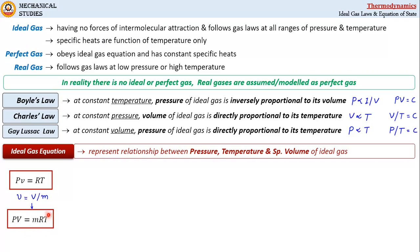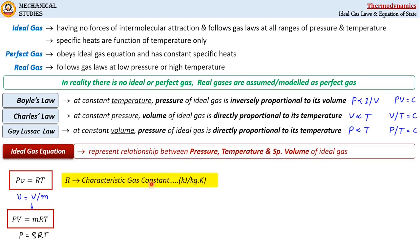Both pv = RT and pV = mRT are ideal gas equations. If we take volume to the right-hand side, then mass upon volume becomes density, and we can write the expression as p = ρRT, where ρ is density. This is also an ideal gas equation in a different form.